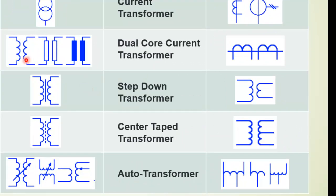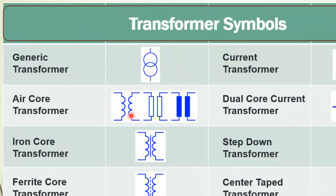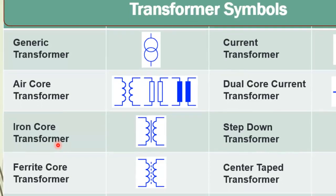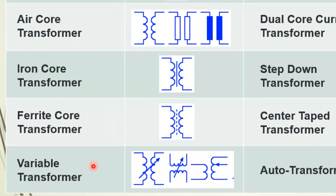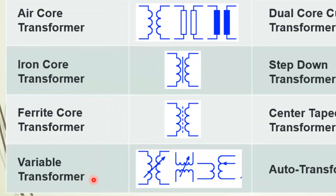Now we have different types of symbols for transformers. This symbol is for the generic transformer. Then we have the air core transformer, for which we have three different symbols. The very common type is the iron core transformer, where a single line represents the iron core. Then the ferrite core transformer, which is specially for high frequency applications. Finally, the variable transformer, where an arrow represents the variable output voltage.